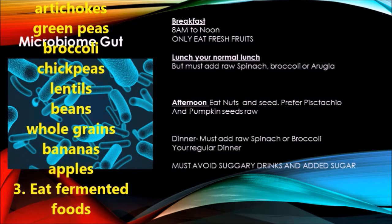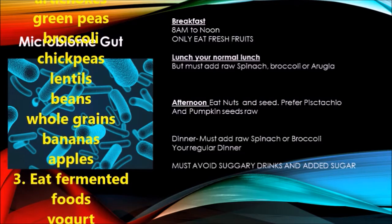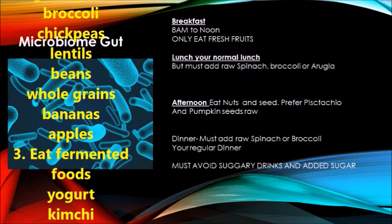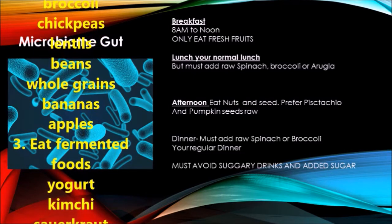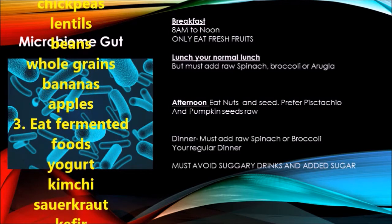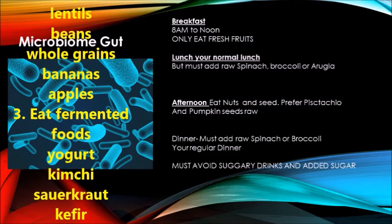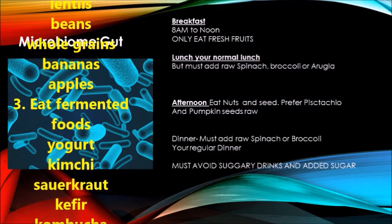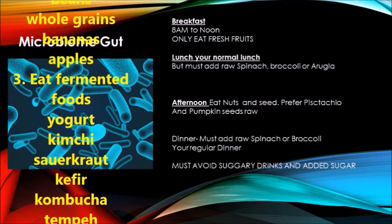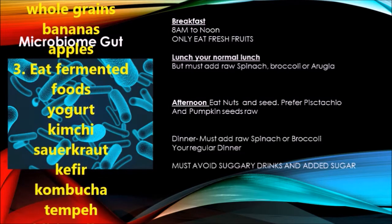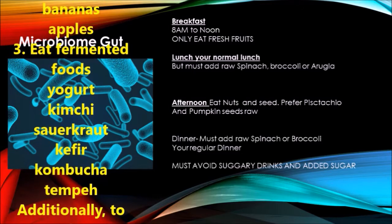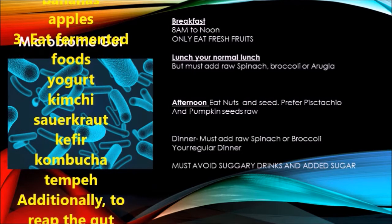Most microbiota are symbiotic, where both the human body and microbiota benefit, and some in smaller numbers are pathogenic, promoting disease. In a healthy body, pathogenic and symbiotic microbiota coexist without problems, but if there is a disturbance in that balance — brought on by infectious illnesses, certain diets, or prolonged use of antibiotics or other bacteria-destroying medication — dysbiosis occurs, stopping normal interactions. As a result, the body may become more susceptible to disease.